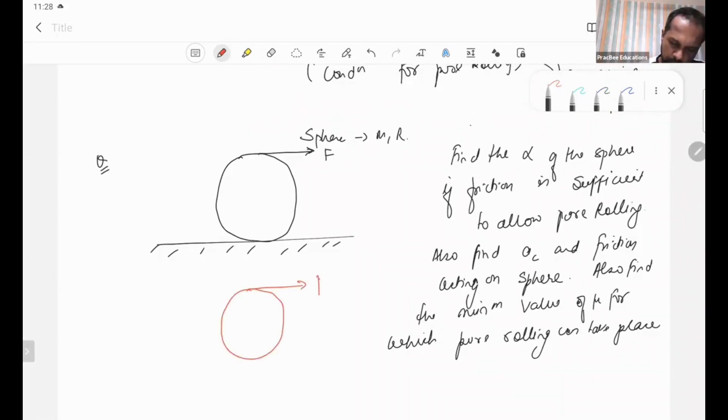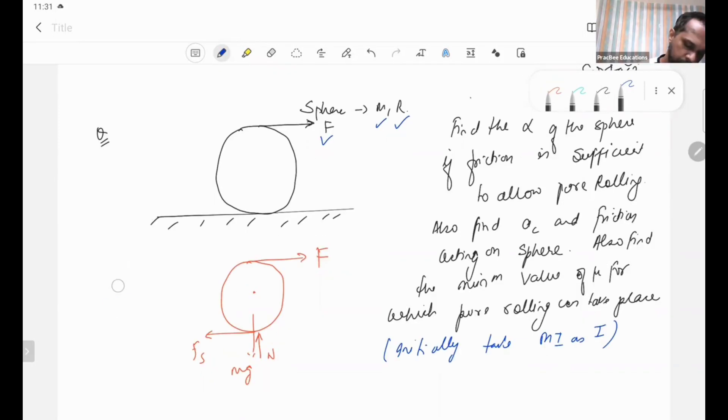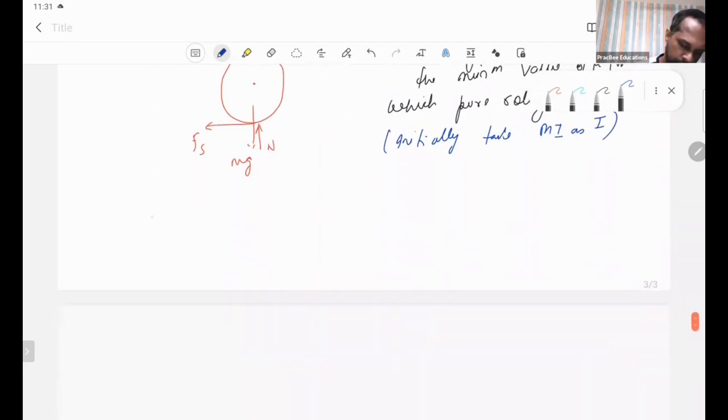First free body diagram: F is applied, there is some static friction Fs, some normal reaction, and some Mg. Find alpha of the sphere. This is in rotational motion, this is not in equilibrium.